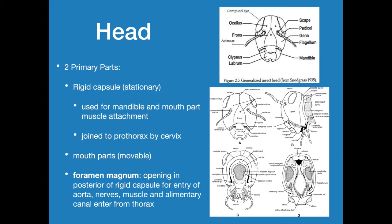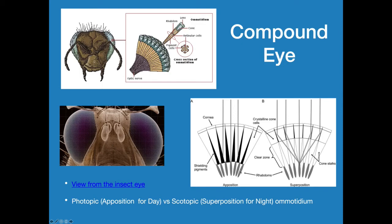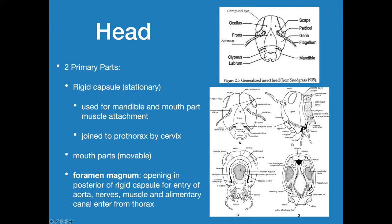The foramen magnum is the opening in the posterior of the capsule. This is where the aorta, nerves, muscle, and alimentary canal enter. Here we have the back of the head with the foramen magnum right in the center. Everything is coming into the head through this opening. This is the back here; we're looking towards the bottom, with the mandibular cavities and such on the side and the front.